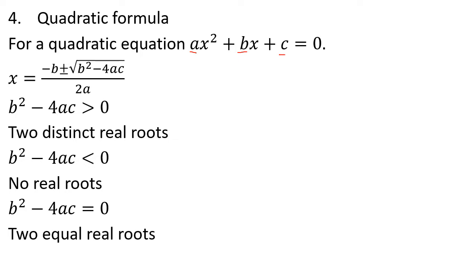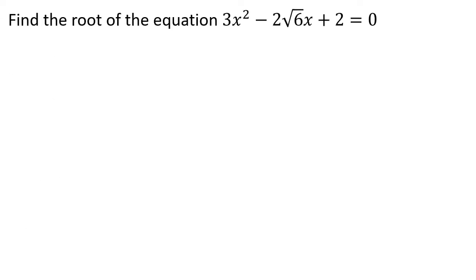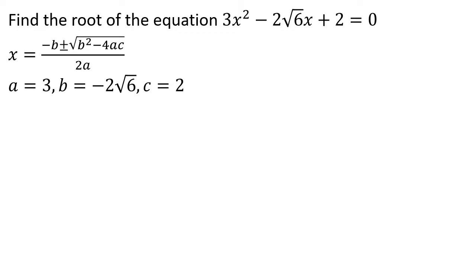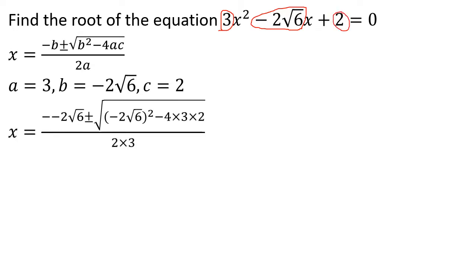Then b squared minus 4ac equal to 0. Consider 2 root 6x plus 2 equal to 0. Our equation is minus b plus or minus root of b squared minus 4ac by 2a. The value of a is the coefficient of x squared, and b is the coefficient of x — negative sign, so b is minus 2 root 6, and the constant c is 2.